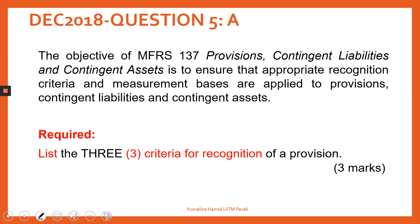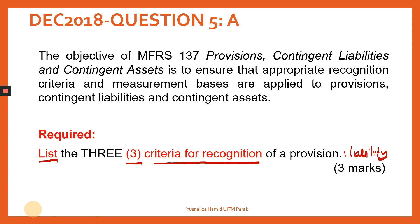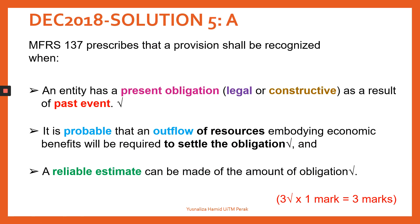The first part of the question, Part A. The objective of MFRS 137 is to ensure that appropriate recognition criteria and measurement basis are applied to provisions, contingent liabilities and contingent assets. You are required to list three criteria for recognition. Recall that a provision is actually recognized as a liability. The first criterion is a present obligation as a result of a past event — either a constructive obligation or a legal obligation.